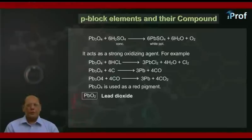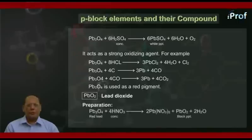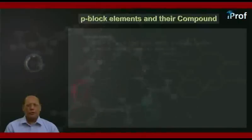Next is PbO2. We call it lead dioxide. Preparation: Pb3O4, that is red lead, plus 4HNO3 concentrated. Then we have together to give 2Pb(NO3)2 plus PbO2, the black precipitate, plus 2H2O.